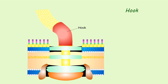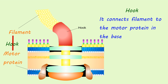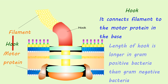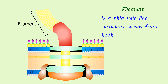Hook is the wider region at the base of the filament. It connects the filament to the motor protein in the base. The length of the hook is longer in gram-positive bacteria than in gram-negative bacteria. Filament is a thin hair-like structure that arises from the hook.